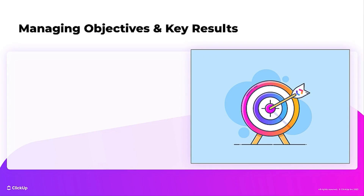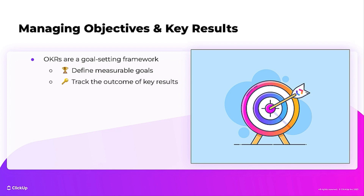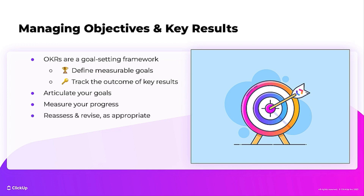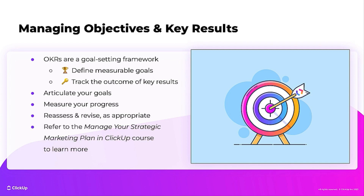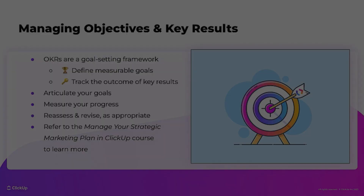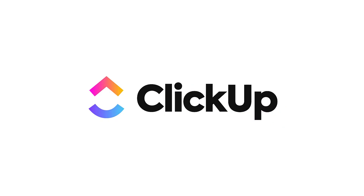The OKRs folder gives you a place to plan and track your team's objectives and key results. OKRs represent a goal-setting framework that helps you define measurable goals — the objective — and track the outcome of the steps required — the key results — to meet those goals. OKRs are important because they help you articulate your goals, track and measure progress towards achieving those goals, and allow you to reassess and revise your goals as appropriate. We won't be discussing setting up and tracking OKRs today, but they are discussed in detail in the Manage Your Strategic Marketing Plan and ClickUp course. Thanks for joining us.